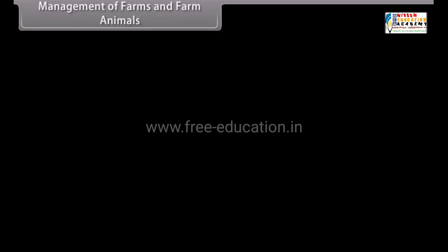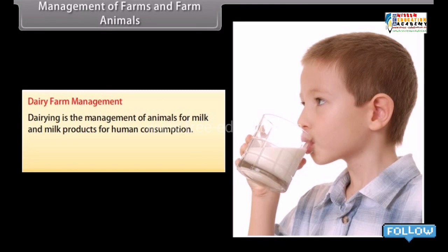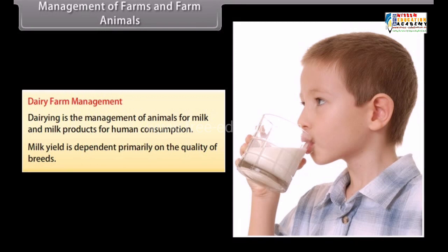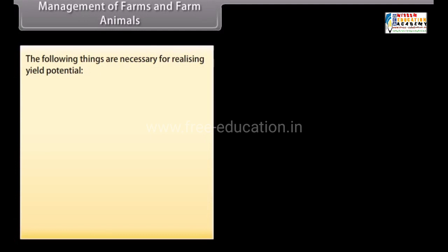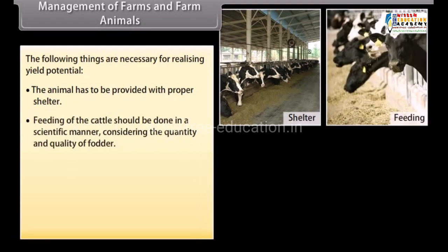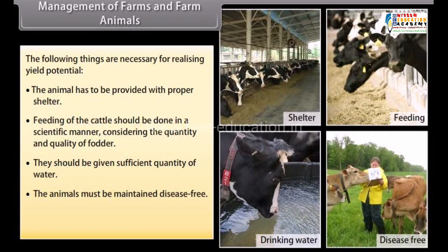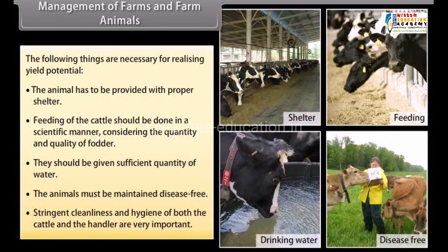Dairy farm management: Dairy is the management of animals for milk and milk products for human consumption. Milk yield is dependent primarily on the quality of breed. The animal must be provided with proper shelter, fed scientifically considering the quantity and quality of fodder, given sufficient water, maintained disease-free, with stringent cleanliness and hygiene of both the cattle and the handler.